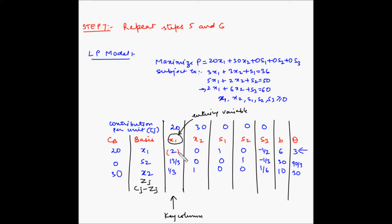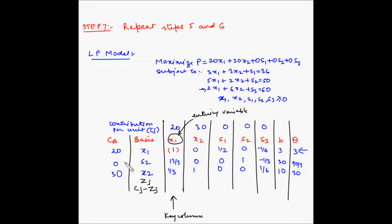Dividing the key row by 2: this becomes 1, this becomes 0, 1/2, minus 1/4, and column B gives 3. Let me replace these numbers. Each remaining row — S2 and X2 — is substituted by a new replaced row. The variable and its CB column element are written as they are.